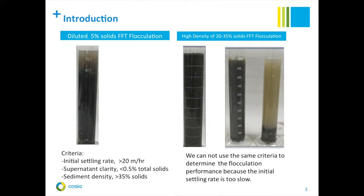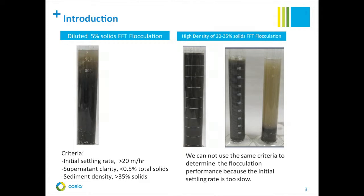It's well known that dilution of thickener feed is one of the most effective methods for fine clay flocculation and polymer dosage reduction. However, for FFT centrifuge, thin lift, and thick lift applications, we cannot dilute the FFT to the same level as in thickener applications because that is not economical. These two videos show the difference during flocculation testing. If you dilute your FFT to 5% solids, it settles very fast. We already have criteria to judge the flocculation performance — the settling rate should be more than 20 meters per hour, supernatant clarity should be less than 0.5% total solids, and sediment density should be more than 35% solid content.